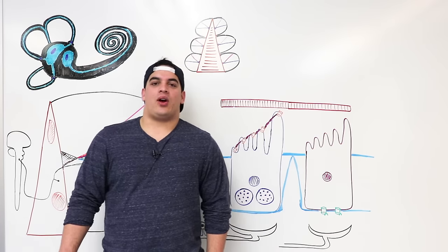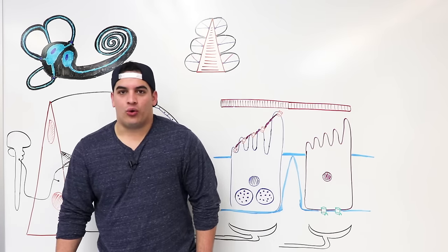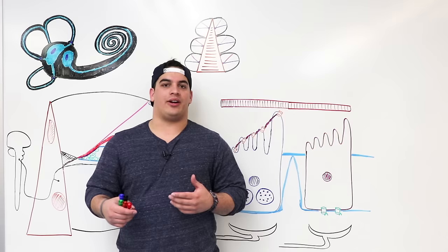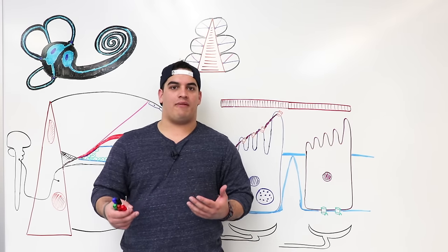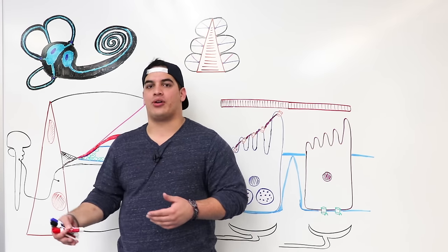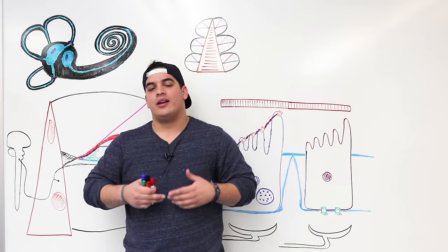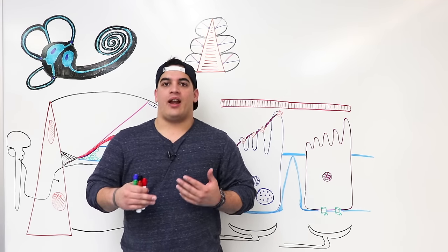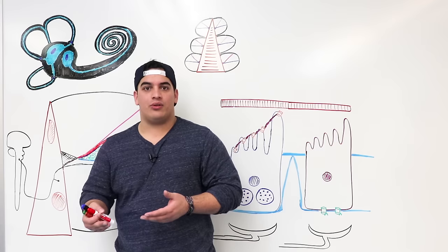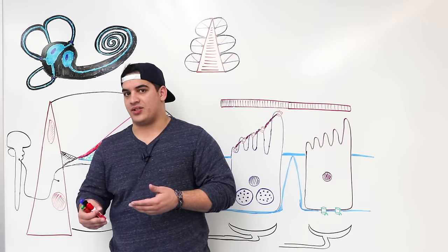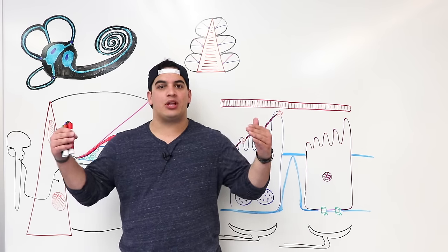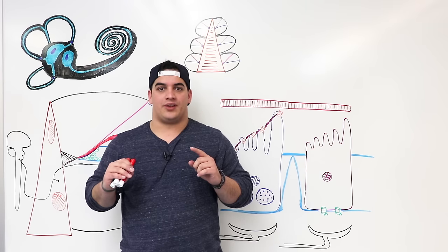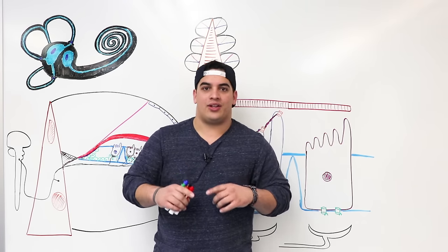Alright Ninja Nerds, in this video we're going to talk about the cochlea. If you haven't already, please go watch our video on the anatomy of the inner ear. In that video we said we're going to dissect the different parts of the inner ear — specifically, this video covers the cochlea, another will cover the vestibule, another the semicircular canals, and then we'll cover the vestibular and auditory pathways through the central nervous system. So let's dig right into the cochlea.